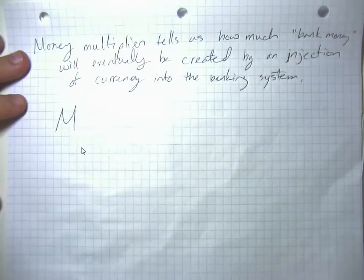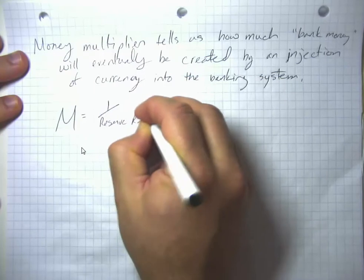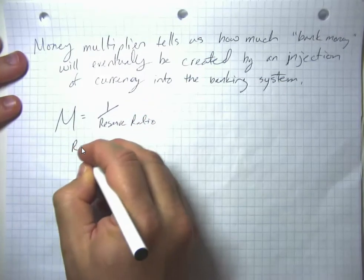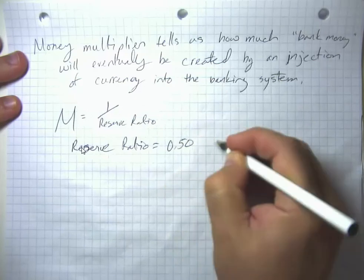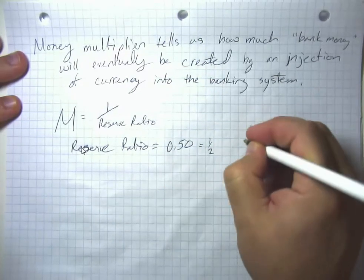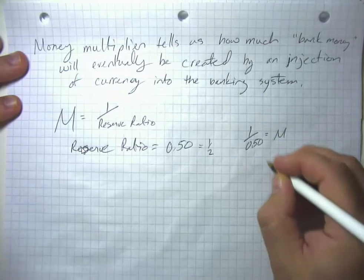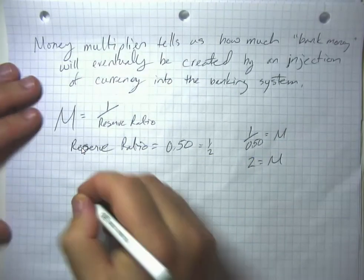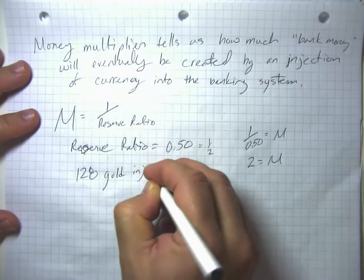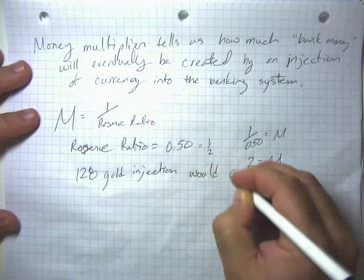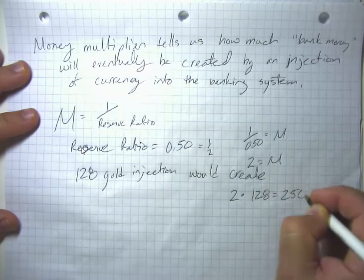This money multiplier, M, is equal to 1 over the reserve ratio. In my example, with a reserve ratio of 50% or one-half, 1 over 50% or one-half is the money multiplier, and so the money multiplier is 2.